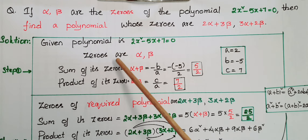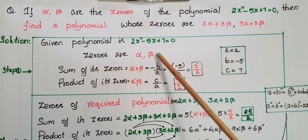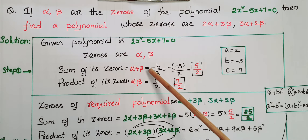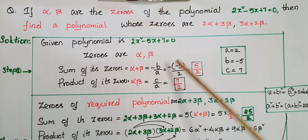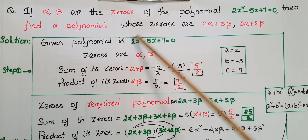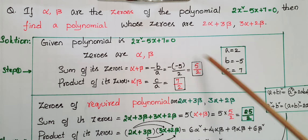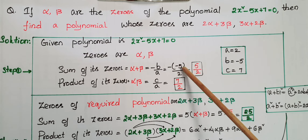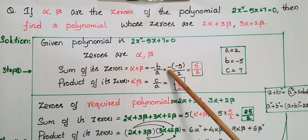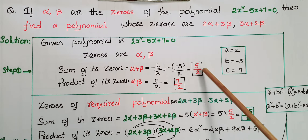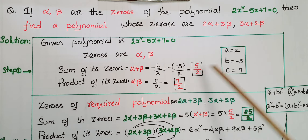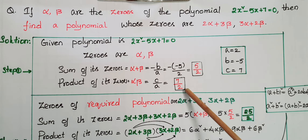For the first polynomial 2x² minus 5x plus 7 equals 0, with zeros alpha and beta: sum of its zeros is α+β = -b/a. Here a=2, b=-5, and c=7, so minus of minus 5 by 2 equals 5/2. And product of its zeros is αβ = c/a = 7/2.